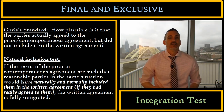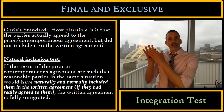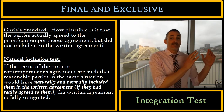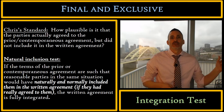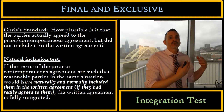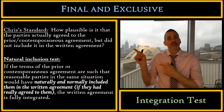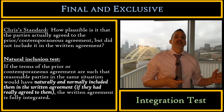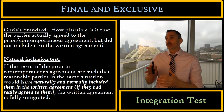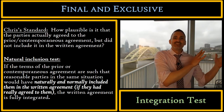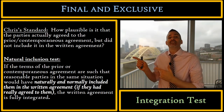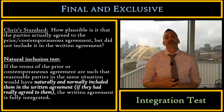The natural inclusion test says: is the prior or contemporaneous agreement one that parties would naturally and normally have included in the written agreement? If the prior agreement is one that we would expect parties to naturally and normally include in the written agreement had they really agreed to it, then the written agreement is a full integration. If the parties would have naturally and normally included the prior agreement into the written agreement and they didn't, then we're saying they probably didn't agree to it — so we're not going to let the jury see it.